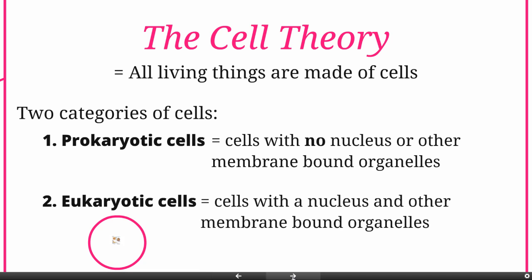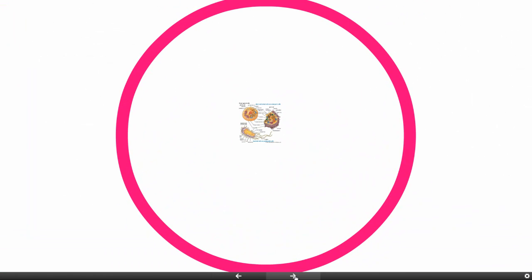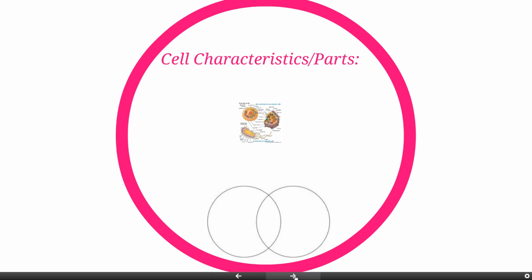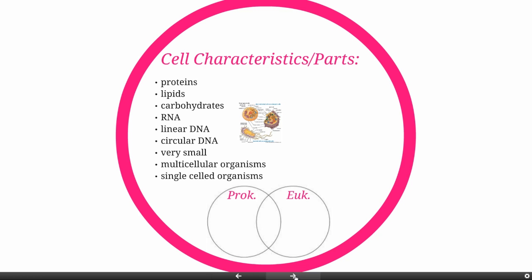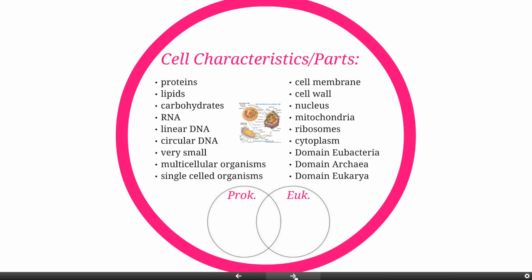Eukaryotic cells are cells with a nucleus and other membrane-bound organelles. Karyo means nucleus, so these are the 'true nucleus' cells. A good exercise, since you've maybe already read your textbook, is to figure out where each characteristic would fit if you do a Venn diagram with prokaryotic cells on one side and eukaryotic cells on the other.